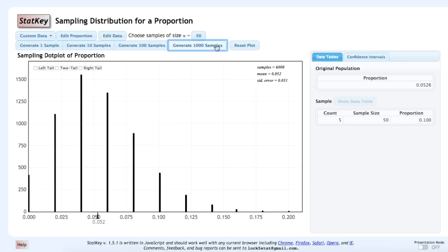This is my distribution of sample proportions. So, given a population proportion of 0.0526, we repeatedly pulled samples of N equals 50. And we recorded each sample's sample proportion, and that is what is shown on our dot plot here.